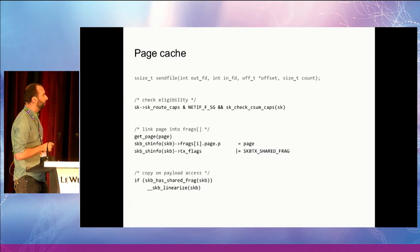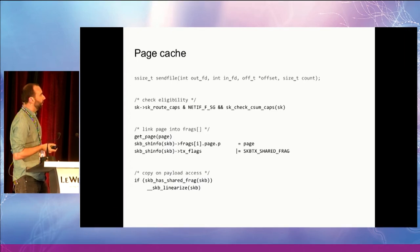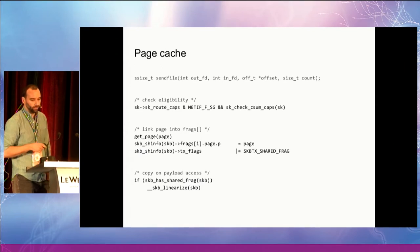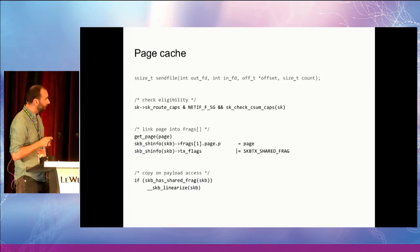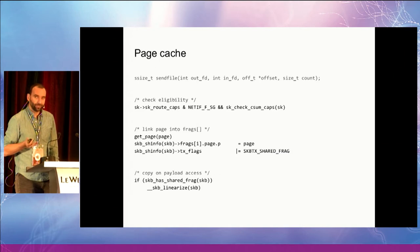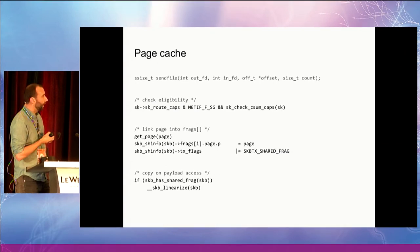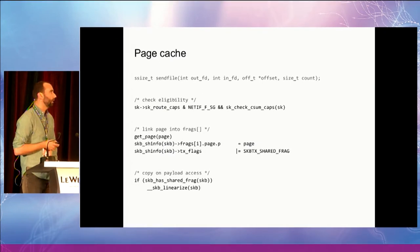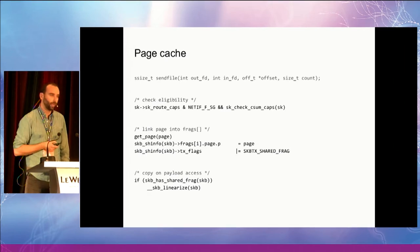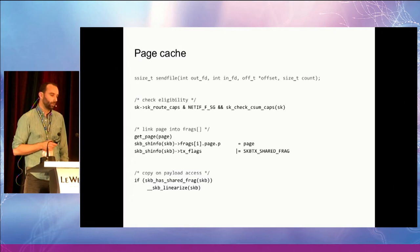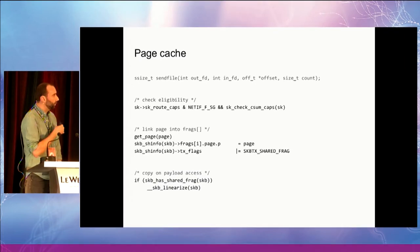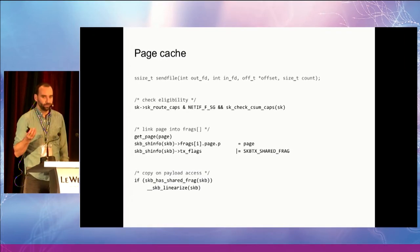In the few cases where the network stack would actually touch data from the payload, there are guards — if SKB has shared frag, we make a local copy via SKB linearize, which gives the SKB a local copy of all the data. Because this is expensive, the mechanism is disabled and replaced with a regular copy if simple checks fail: does the route and device support scatter-gather, and do we support hardware offload? Assuming the normal network path, data will be checksummed by the device, so a change in the page won't cause an incorrect checksum.